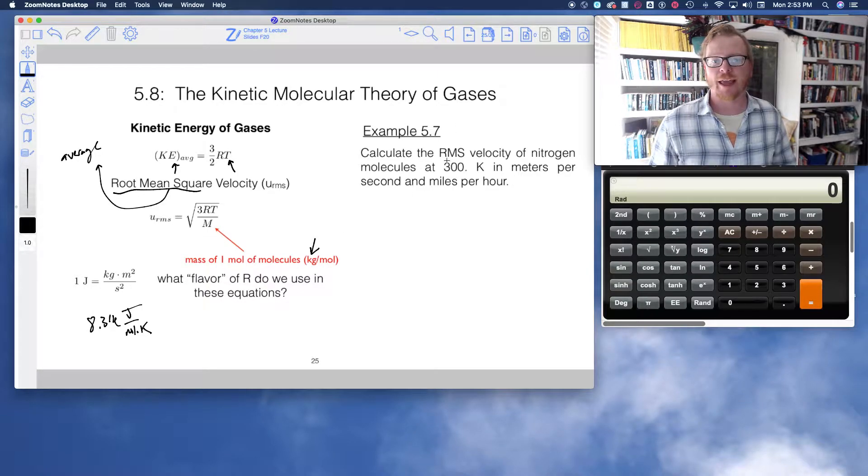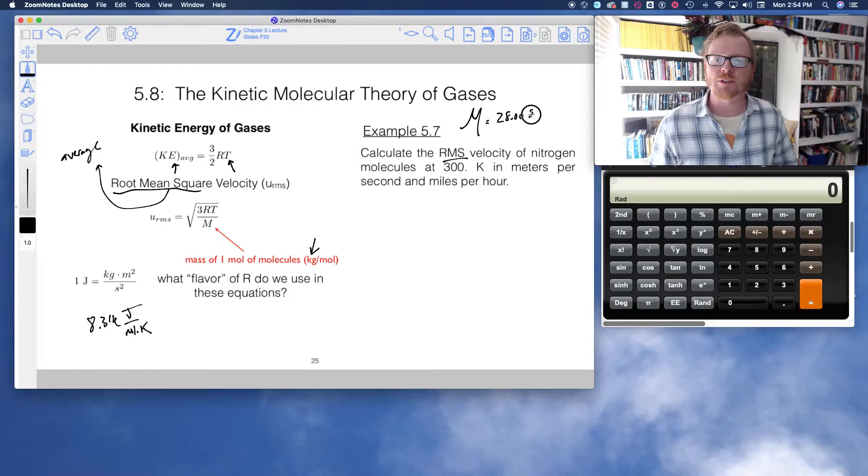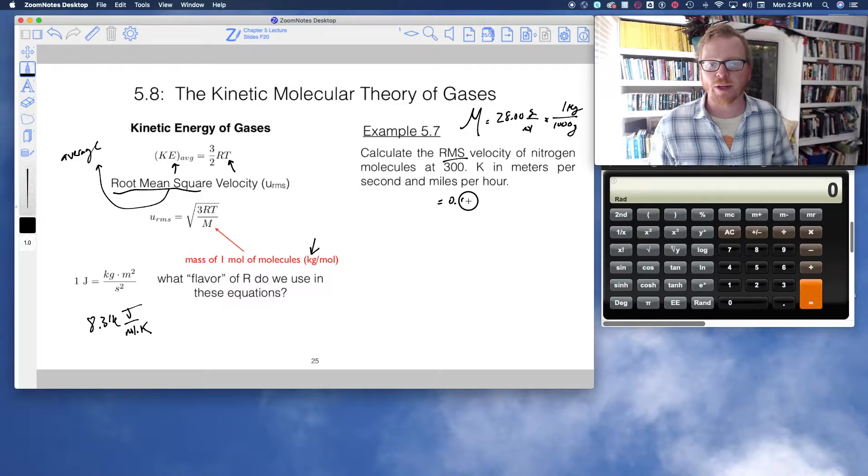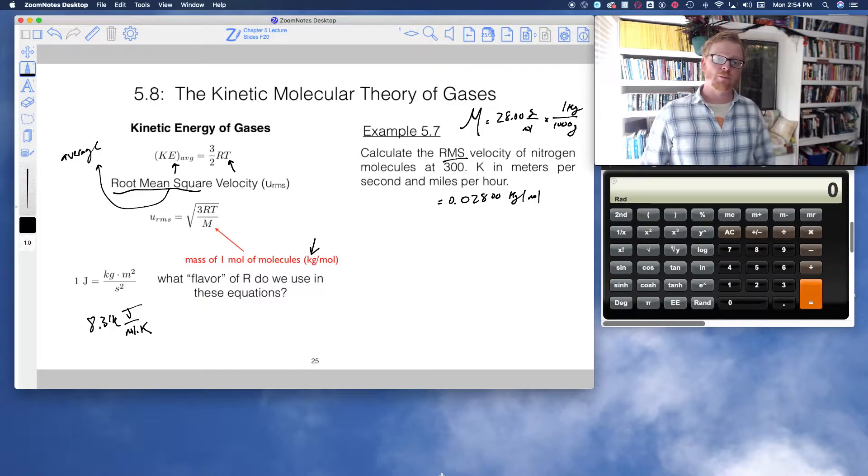This will become a little bit more obvious as we move through the course, as we get into talking more about energy. But for now, what I'm going to tell you is R, this has to be this flavor, 8.314 joule per mole K, and our molar mass has to be in kilogram per mole. So how do we use this equation? Calculate the RMS velocity of nitrogen molecules at 300 Kelvin in meters per second and miles per hour. So the molar mass of nitrogen, the book uses that fancy M, is 28.00 grams per mole. I need to make that a kilogram per mole to use in this equation. So there's 1,000 grams in 1 kilogram, which means the mass we have to use is 0.02800 kilograms per mole.